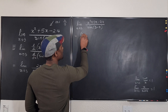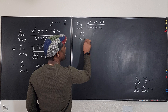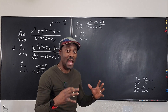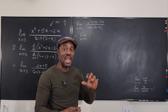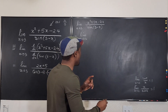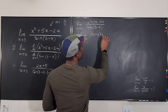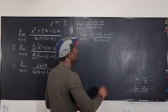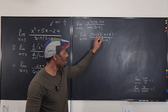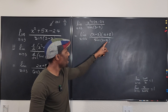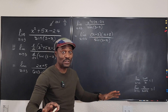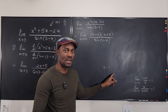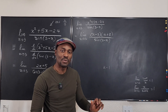We need to create (3 minus x) on top by factoring. The limit as x goes to 3 — factor the numerator: what two numbers multiply to negative 24 but add to positive 5? That's positive 8 and negative 3. So it factors into (x minus 3)(x plus 8), divided by sine(3 minus x). We have almost what we need, but we have (x minus 3) and need (3 minus x). We can rewrite (x minus 3) as negative(3 minus x).